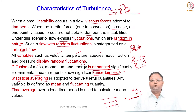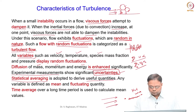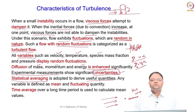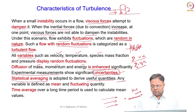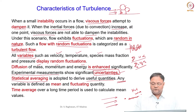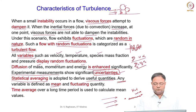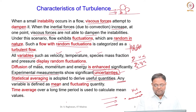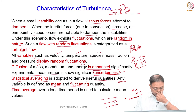Statistical averaging gives meaningful quantities that can be used to quantify the turbulence. For example, we take the fluctuating quantity, compute the RMS (root mean square) value and the mean value. Any variable like velocity, pressure, temperature, or species mass fraction will have a mean value obtained by time averaging, and the instantaneous value constitutes the fluctuating value.